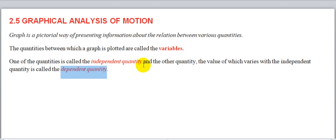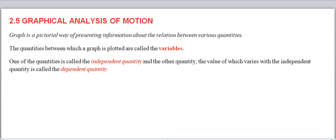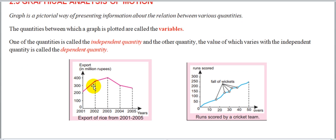One of the quantities is called independent quantity and others are called dependent quantities which depend upon the independent quantity۔ مثلاً motion میں velocity، distance، acceleration — یہ سب time کے ساتھ change ہوتے ہیں، اس لیے یہ dependent quantities ہیں اور time independent quantity ہے۔ تو کسی بھی graphical method میں دو طرح کی quantities ہوتی ہیں: independent اور dependent۔